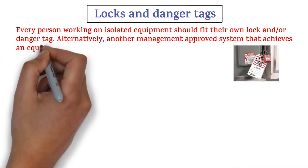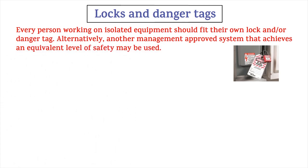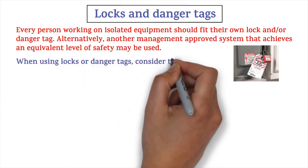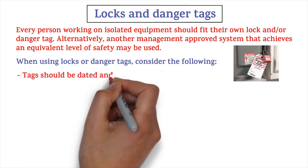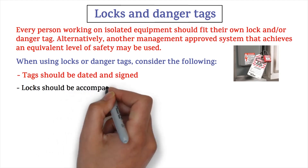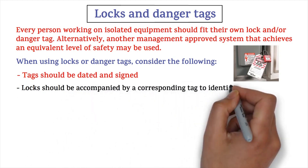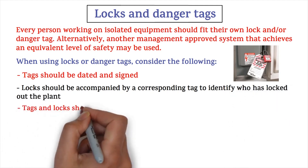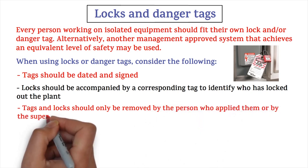Alternatively, another management-approved system that achieves an equivalent level of safety may be used. When using locks or danger tags, consider the following: tags should be dated and signed; locks should be accompanied by a corresponding tag to identify who has locked out the plant; tags and locks should only be removed by the persons who applied them.